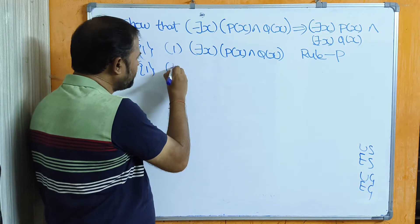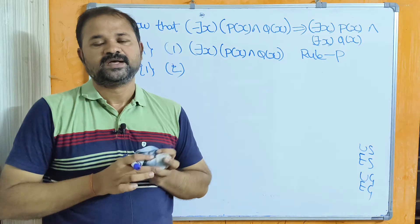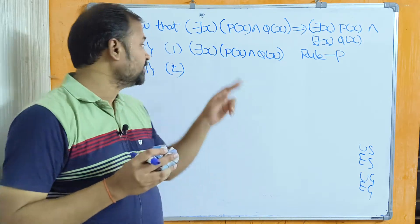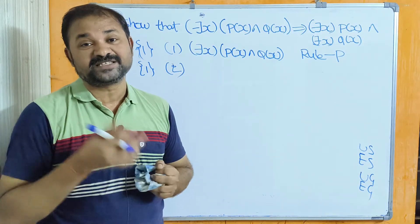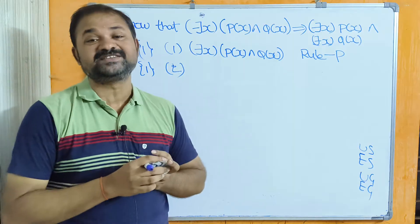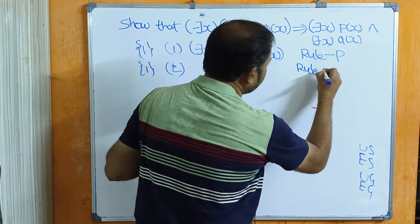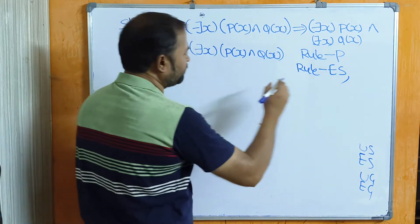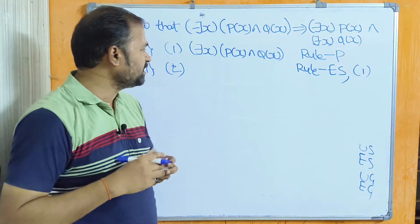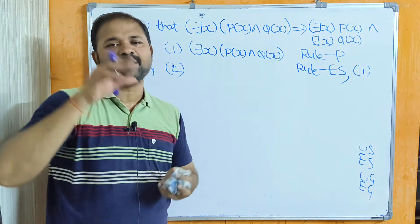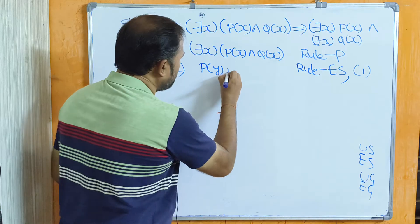Next, statement formula number 2. Here we can't apply the formula on this premise directly, so before applying the formula we have to eliminate the existential quantifier. We eliminate it with the help of the specification law — since this is an existential quantifier, we use Rule ES on statement formula number 1. The existential quantifier is removed and in place of x we replace with y, giving us P(y) ∧ Q(y).